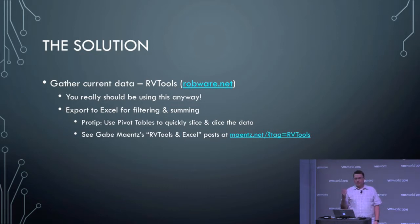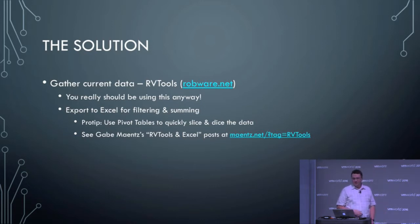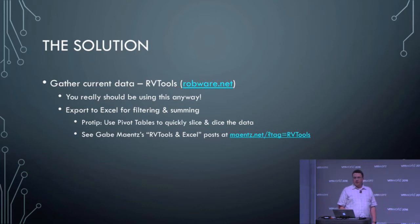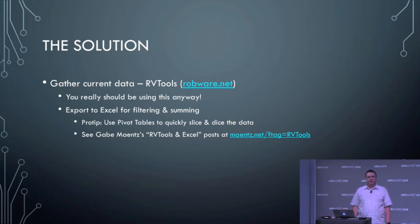There's a little pro tip here: if you're a little more familiar with Excel, you can use pivot tables to really slice and dice that RVTools data that comes out. My buddy Gabe Mentz, who's actually sitting in front of me right now, wrote a few blog posts about doing this. So if you check out his site, he's got a few RVTools and Excel posts on how to really slice and dice that data.